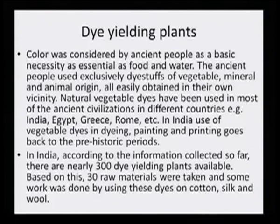Color was considered by ancient people as a basic necessity, as essential as food and water. The ancient people used exclusively dye stuffs of vegetable, mineral and animal origin, all easily obtained in their own vicinity. Natural vegetable dyes have been used in most ancient civilizations in different countries — India, Egypt, Greece, Rome, etcetera. In India, use of vegetable dyes in dyeing, painting and printing goes back to prehistoric periods.